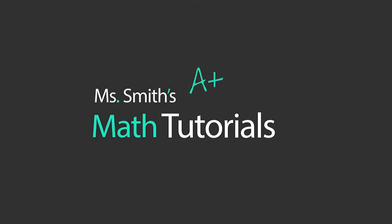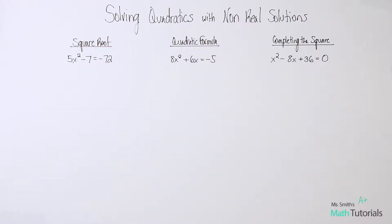Welcome to Ms. Smith's Math Tutorials. I'm Ms. Smith. In this video, we're going to be talking about solving quadratics with non-real solutions. These are your solutions where you end up with a negative number underneath a square root, and we have to take the imaginary out — the i for the negative one. We're going to look at three different types of solving where this can happen.